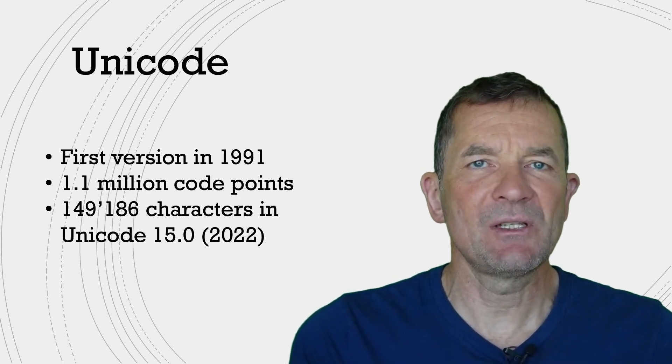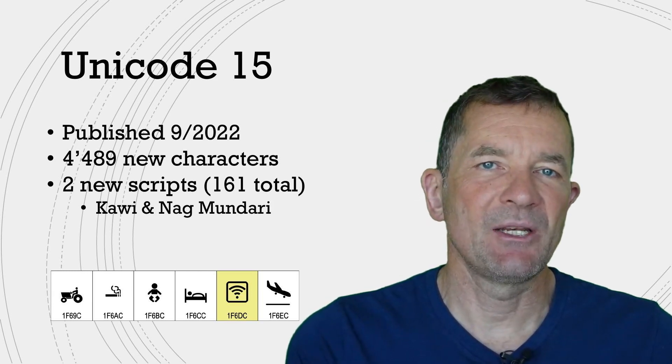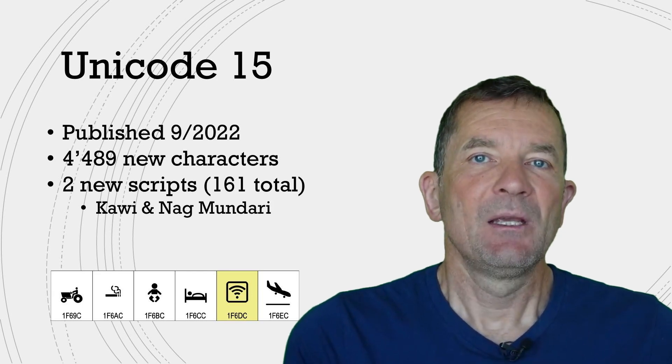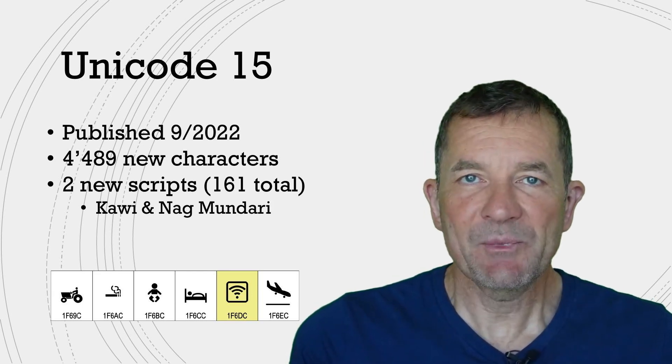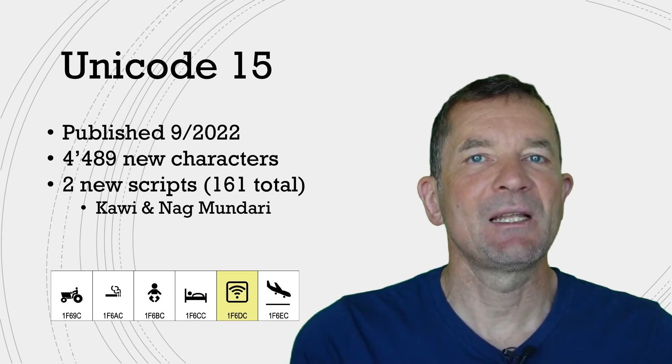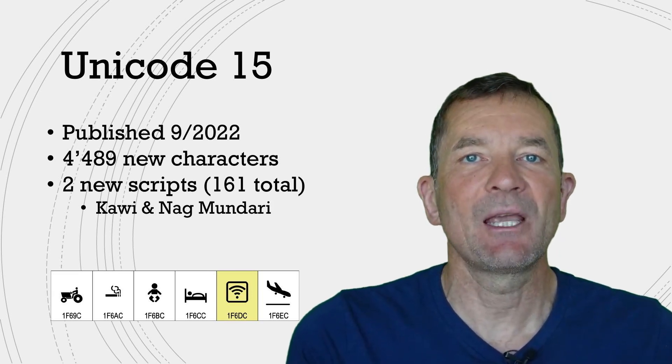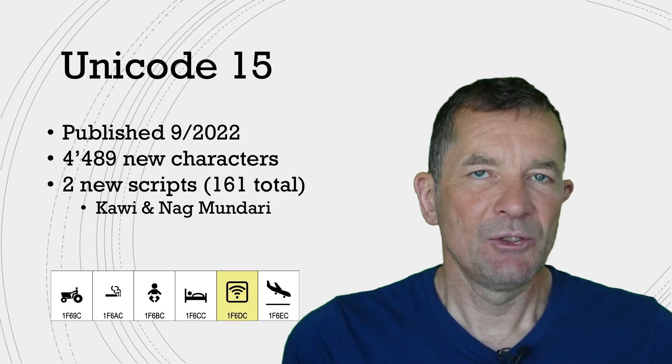Unicode is constantly evolving. For example, Unicode 15, which was published in September 2022, added four and a half thousand new characters. It added these characters as part of two new scripts, bringing the total number of supported scripts in Unicode to 161.